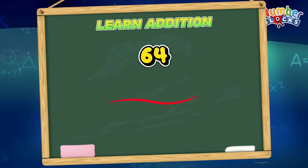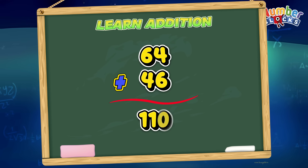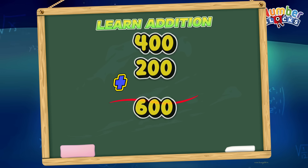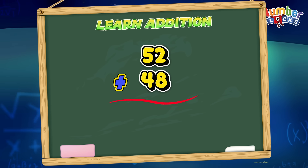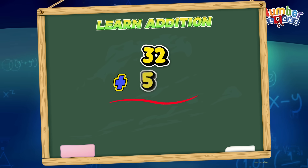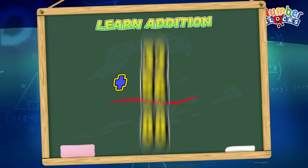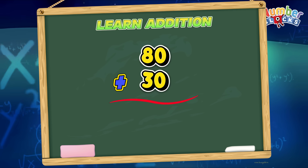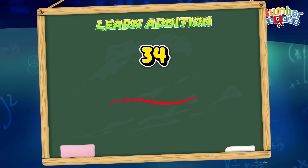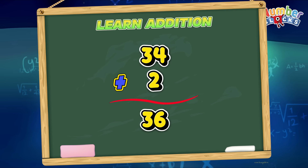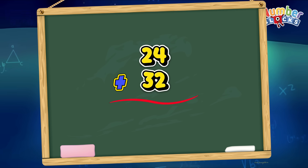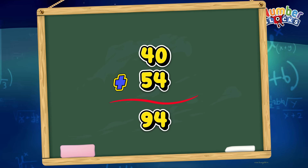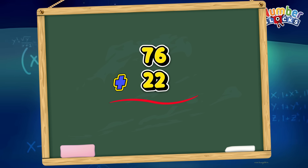64 plus 46 is equals to 110. 400 plus 200 is equals to 600. 52 plus 48 is equals to 100. 32 plus 56 is equals to 88. 4 plus 2 is equals to 6. 80 plus 30 is equals to 110. 34 plus 2 is equals to 36. 24 plus 34 is equals to 56. 40 plus 54 is equals to 94. 76 plus 22 is equals to 98.